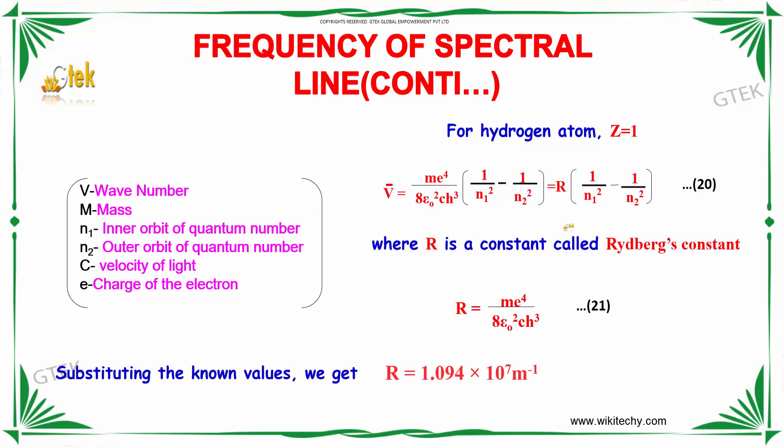For hydrogen atom (Z=1), we define me⁴/(8ε₀²ch³) = R, which is Rydberg's constant.